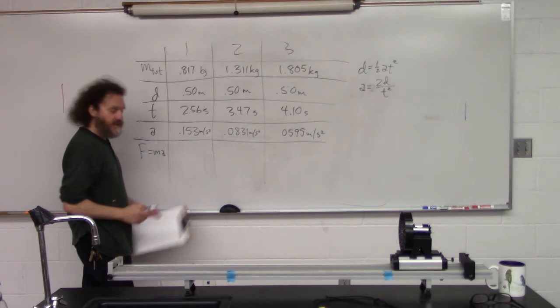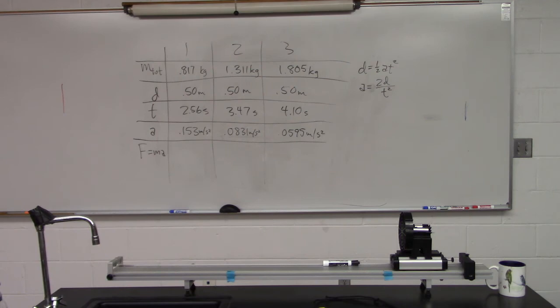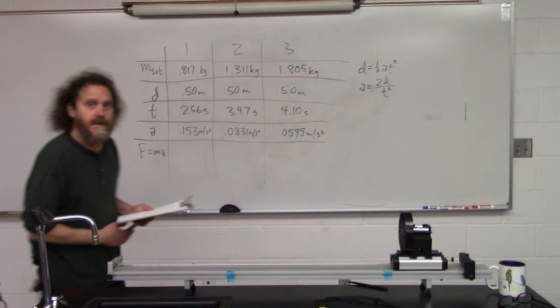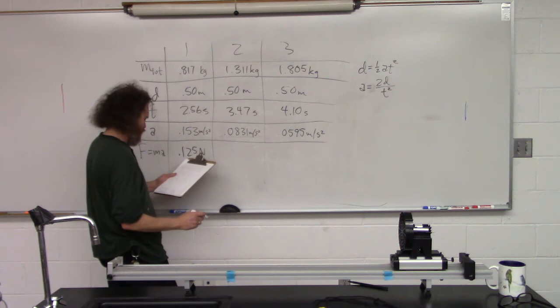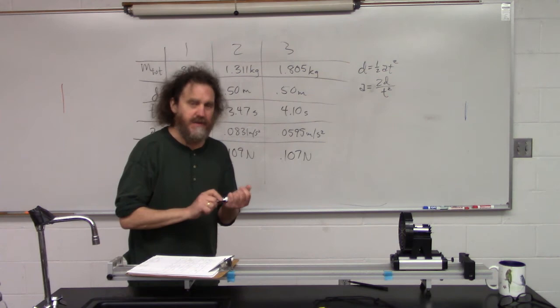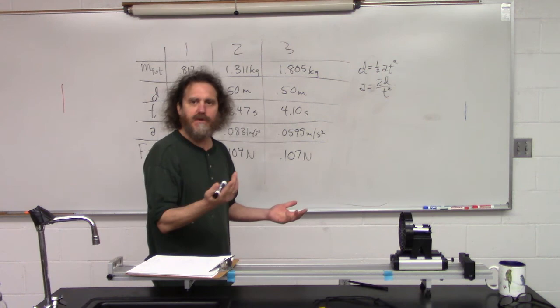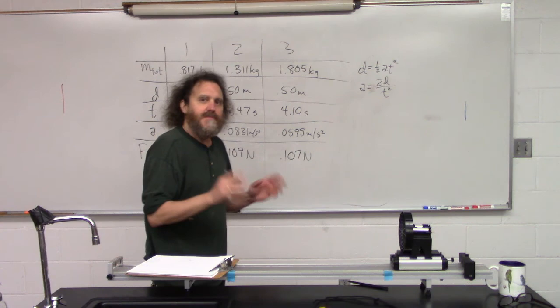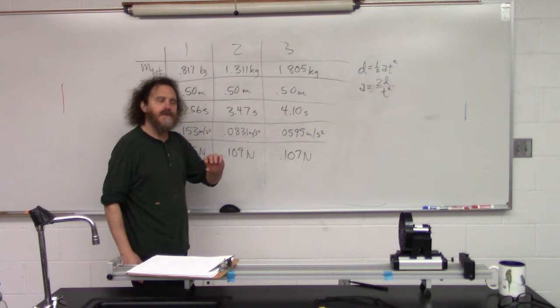For each case, I can figure out the net force by multiplying mass times acceleration. The calculated net forces are approximately 0.125 newtons, 0.109 newtons, and 0.107 newtons. They're close to each other, which makes sense — it's the same fan providing the force. They're not exactly the same because the more weight on the cart, the more friction the wheels experience, and the more resisting force there is. So I've calculated the net force doing the accelerating.